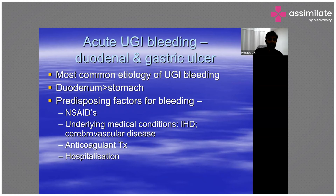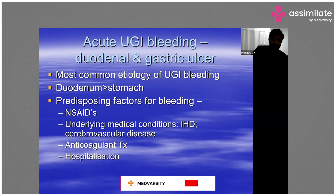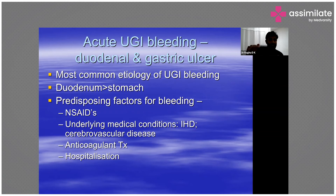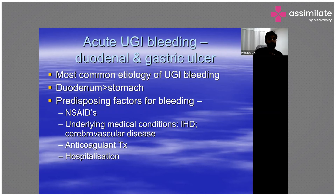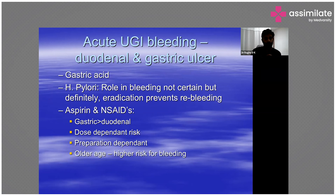COX-2 inhibitors have a much lower risk of bleeding. NSAIDs cause bleeding not only through a corrosive effect but also by decreasing prostaglandin synthesis, reducing bicarbonate secretion — the protective mechanism. Underlying conditions like ischemic heart disease and cerebrovascular disease are important because these patients are more likely on anticoagulant treatment, which predisposes to bleeding.